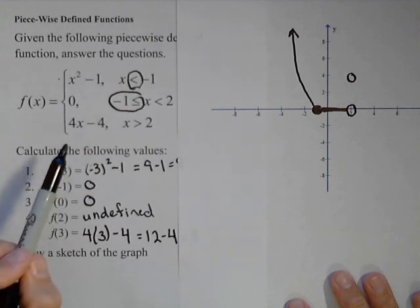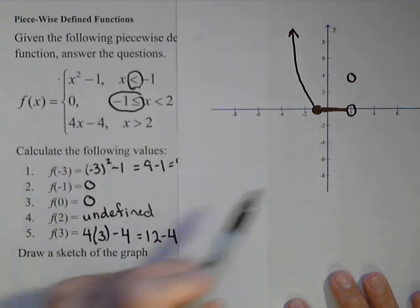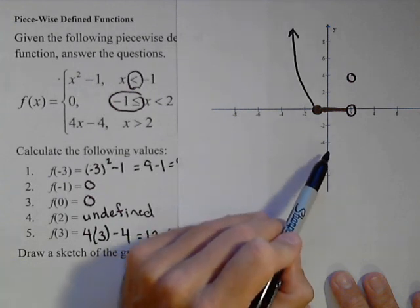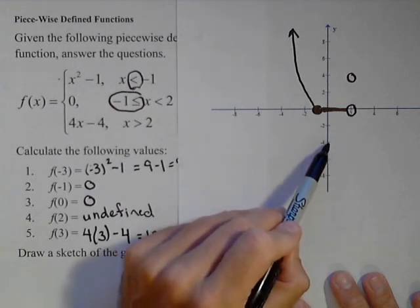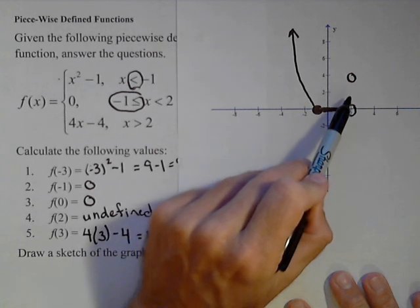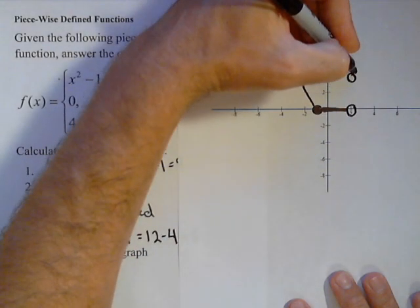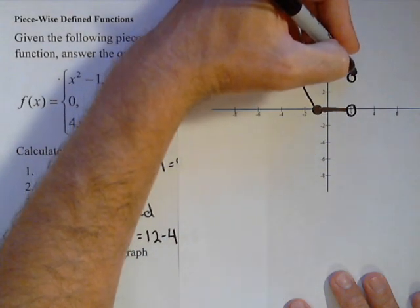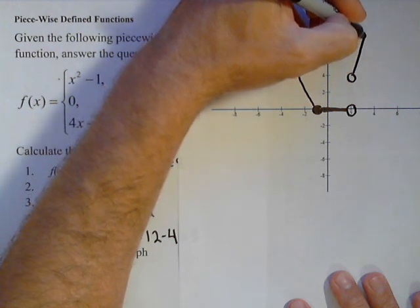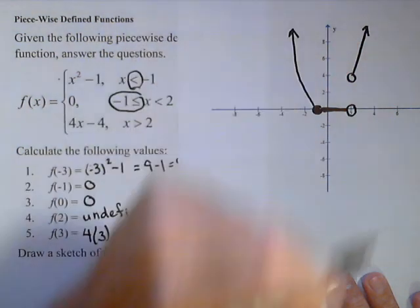Now the graph is four x minus four, so that's a line with a slope of—sorry, excuse me, a slope of four with a y-intercept of negative four. Now we're not going to draw the part of the line here because it's not defined here. We're to the left of two. But if we follow that up, that kind of gives us the slant of our line. We want it to go up four when we go over one. So we're going to have a linear piece that continues on like so.